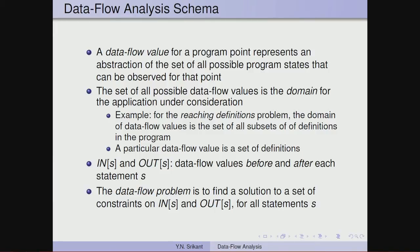When the program is executing, at every point there may be several possible program states, and when we do a data flow analysis we are statically examining the program. We compute an abstraction of this set — an approximation — so it is possible that this approximation includes certain program states which can never be reached at that point in an actual execution, but because of our static analysis this extra information will be included in the abstraction.